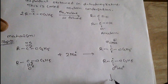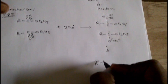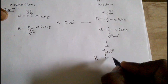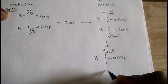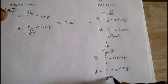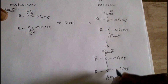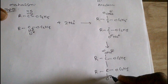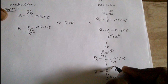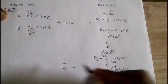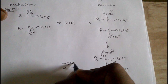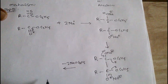Now this dimerizes and we get R-C(=O)-OC₂H₅ paired with another unit. Then double bond shift occurs, this group releases sodium ethoxide, and 2 moles of sodium ethoxide are released.